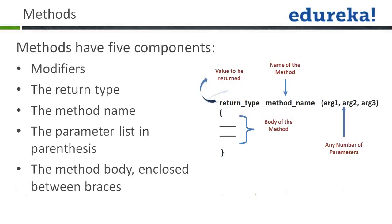Amir asks: is there a difference between methods and functions? Method is the general name. Methods are divided into procedures and functions. A procedure is a method that is not returning anything — it has a void return type. A function is a method that returns a value, whether integer or any type. But they are always a method — it is just a theoretical distinction.